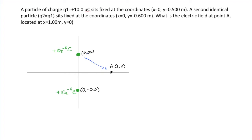These two charges are putting out an electric field. They are positive charges, so they are emanating their electric field, and we're interested in the overlapping of those electric field lines over here at point A.